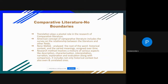The research method involved in comparative literature, when we analyze the research methods in comparative studies, is a mixture of various aspects like description, characterization, interpretation, narration, explanation, and evaluation, along with comparison. It includes not only historical context but also even unrelated ones.